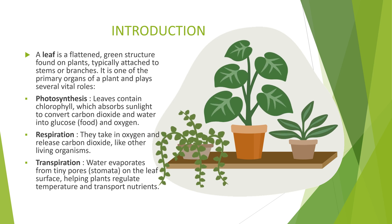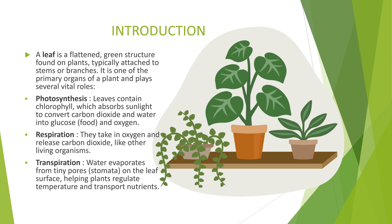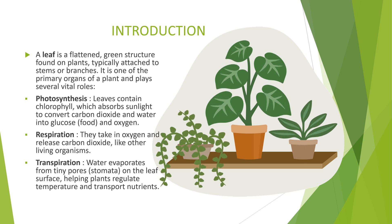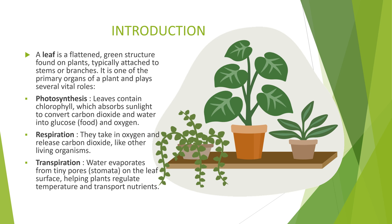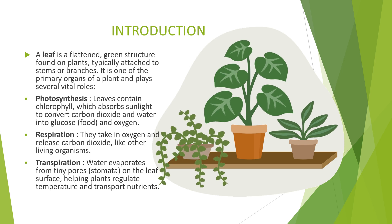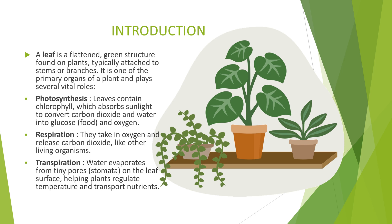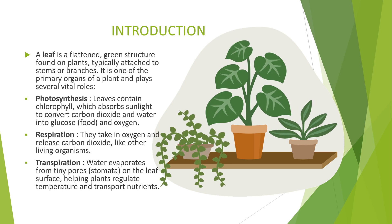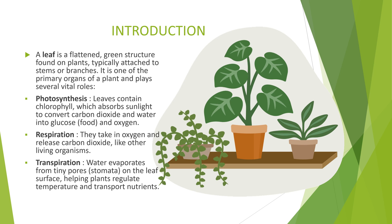1. Photosynthesis: leaves contain chlorophyll which absorbs sunlight to convert carbon dioxide and water into glucose as food and oxygen. 2. Respiration: they take in oxygen and release carbon dioxide like other living organisms. 3. Transpiration: water evaporates from tiny pores called stomata on the leaf surface, helping plants regulate temperature and transport nutrients.